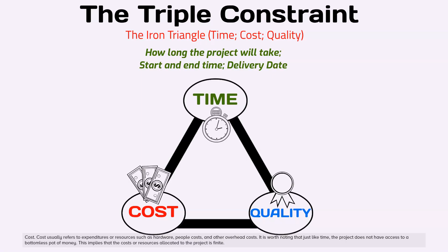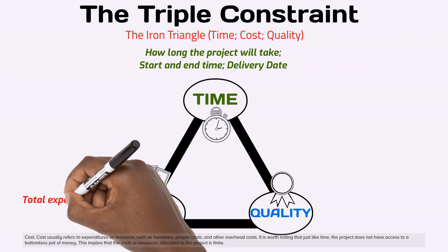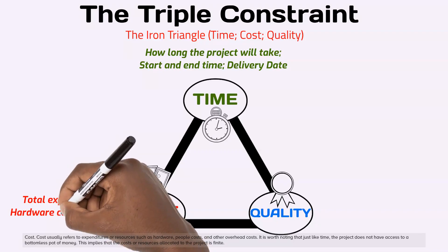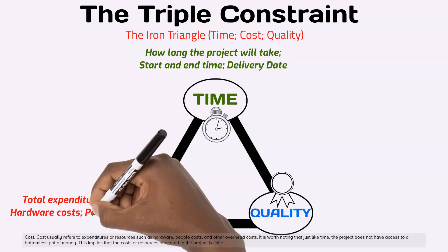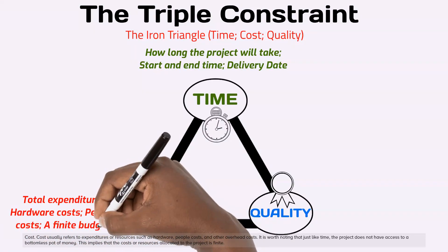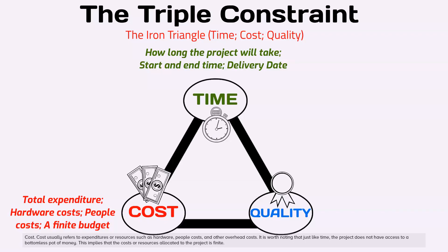Cost. Cost usually refers to expenditures or resources such as hardware, people costs, and other overhead costs. It is worth noting that just like time, the project does not have access to a bottomless pot of money. This implies that the costs or resources allocated to the project are finite.